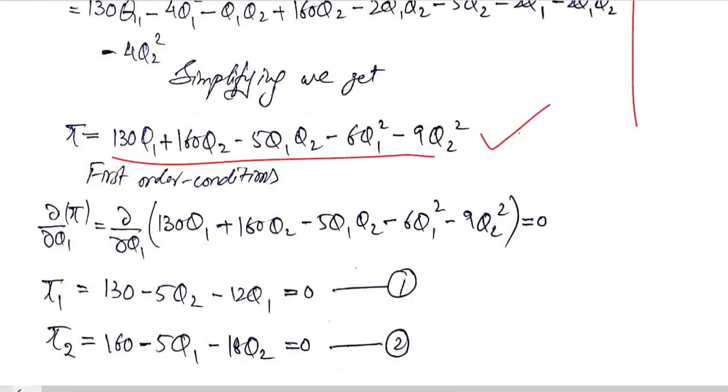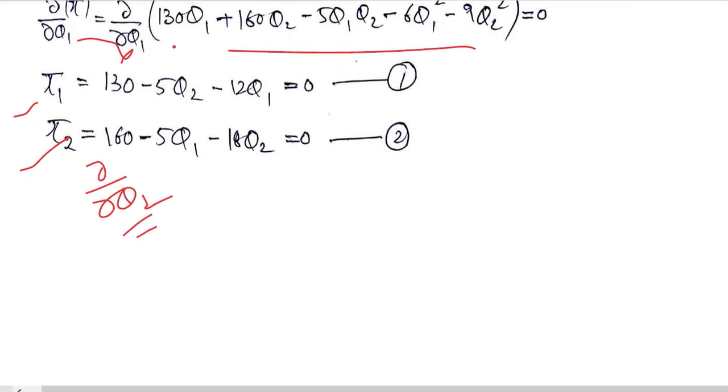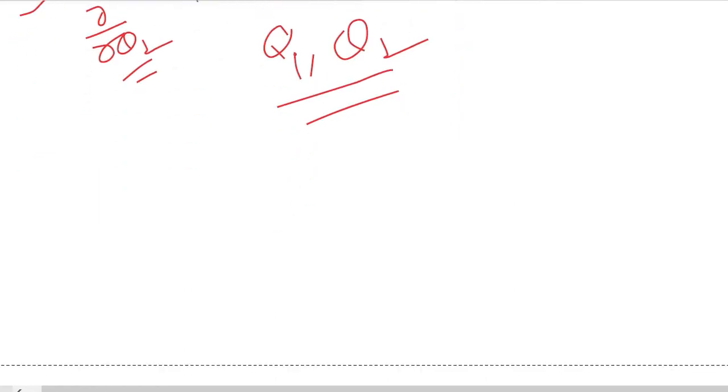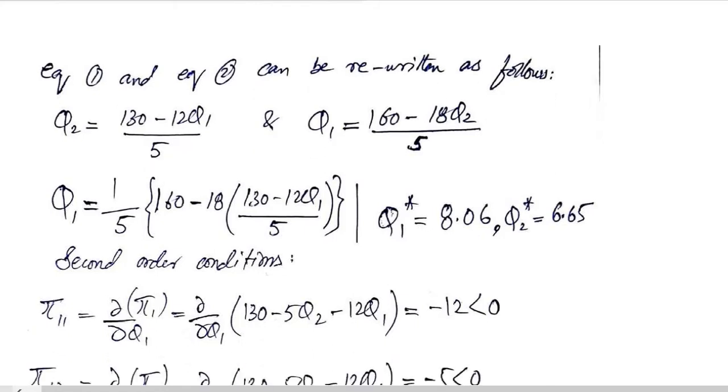First order conditions are to be found. For that we differentiate the function with respect to Q1 first and then with respect to Q2. We get two equations in terms of Q1 and Q2. This means we solve them simultaneously to get the values of Q1 and Q2, which will be the critical values.